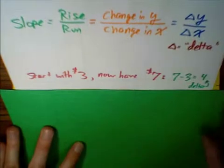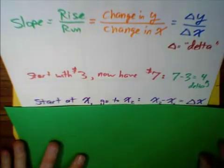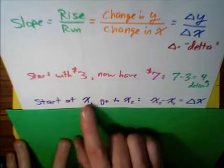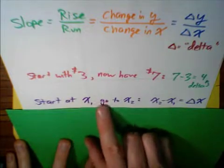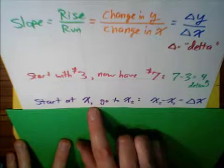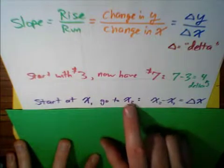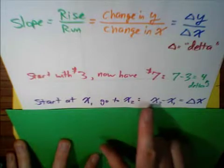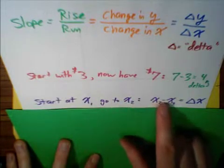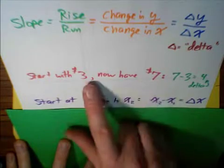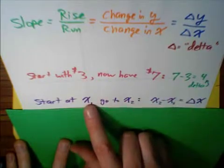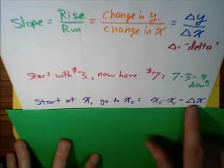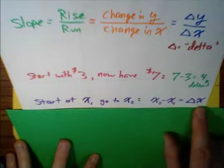Likewise, when we're doing calculations with slope, we're going to be talking about x and y values. So if we were to start at x1, and go to x2, one being the x value of the first point, two, talking about the x value of the second point, again, what's the calculation? You start with the second value, and you subtract the first value. Just like three to seven, we did seven minus three. One to two, we do two minus one. x2 minus x1, and this is also called delta x.